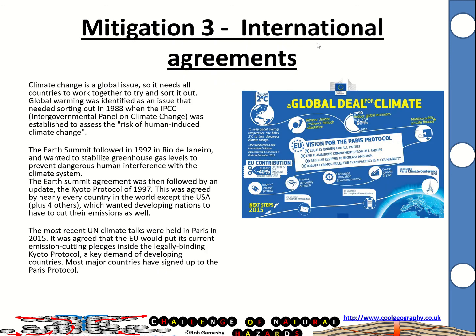The last mitigation strategy is international agreements, and we've had many. Global warming was identified as needing action in 1988 when the Intergovernmental Panel on Climate Change was established. The Earth Summit in 1992 in Rio de Janeiro pledged to stabilise greenhouse gas levels. The Kyoto Protocol followed in 1997. The most significant recent agreement was the Paris Agreement in 2015, where nations agreed to keep global warming below 2°C, with a goal of no more than 1.5°C, and a budget was established to help poorer countries reduce their emissions.